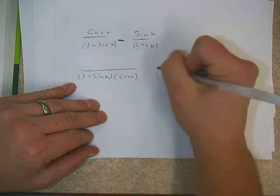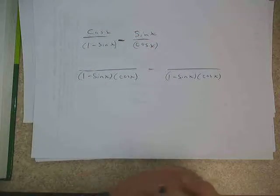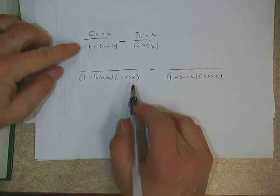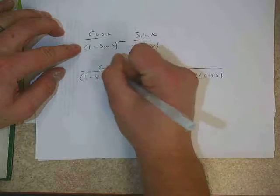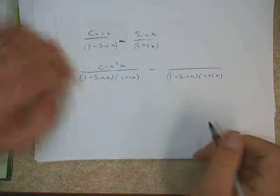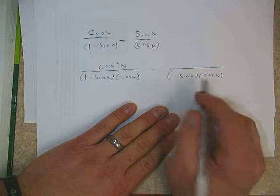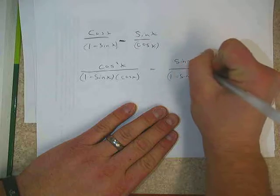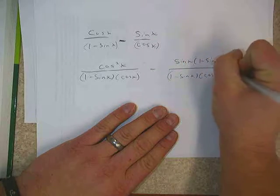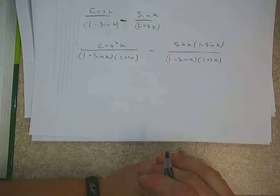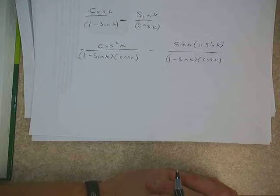Just to illustrate the process here, if we want to put those two fractions together, we're going to get a common denominator. This one got multiplied by cosine, so I'd have cosine squared on top. And then on the bottom, this one got multiplied by 1 minus sine. So on the top, I'd have sine x times 1 minus sine x. That part would be getting the common denominator and then adjusting the numerators.